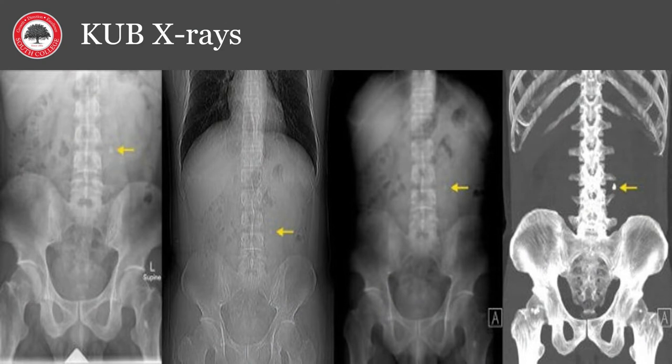A KUB x-ray film is a picture of the kidneys, ureters, and bladder and is used to look for kidney stones. Only calcium kidney stones can be seen on a KUB x-ray, and calcium is the most common type of kidney stone. You can see other stones by using dye — this is an IVP x-ray study.